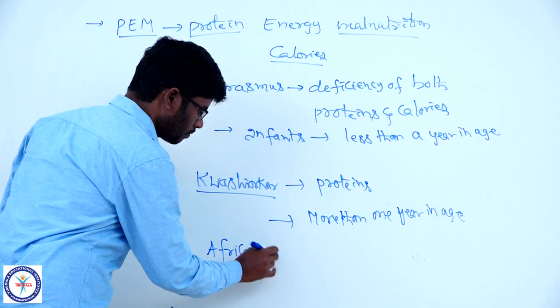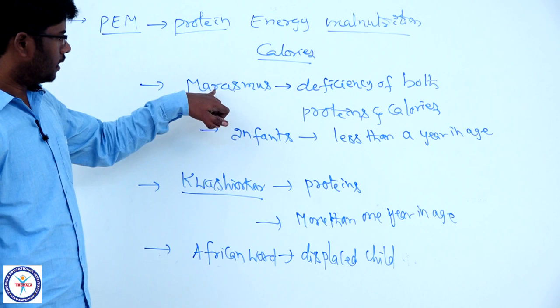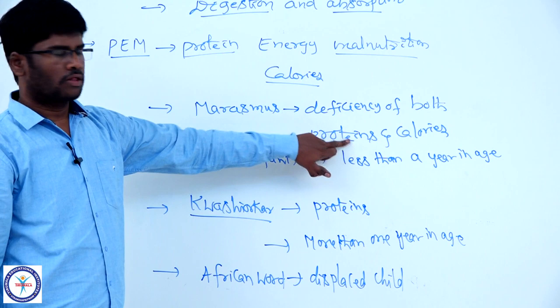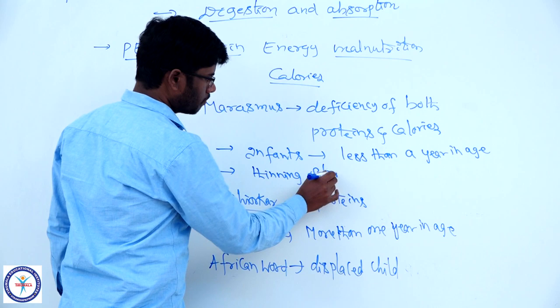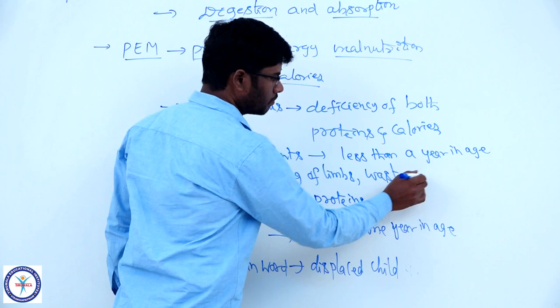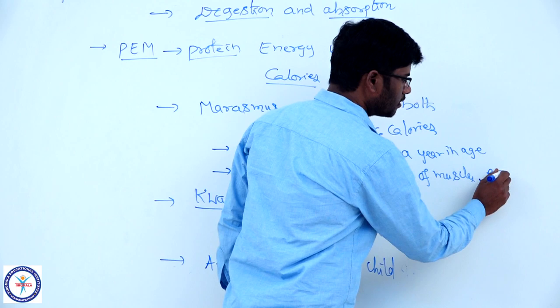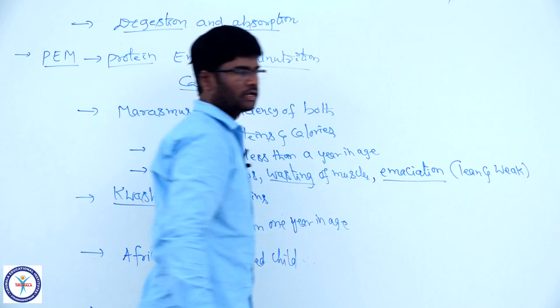The term kwashiorkor is an African word which means displaced child. In marasmus, infants are given altered foods deficient in both proteins and calories. Symptoms in marasmus children include thinning of limbs, wasting of muscles, and emaciation — meaning very lean and weak. The skin becomes dry and wrinkled, and there is no fat under the skin.